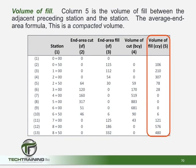Column 5 is the volume of fill between the two previous stations, coming from column 3 — and again these are compacted cubic yards. Station 0+00 had an average end area of 0, while station 0+50 had an average end area of 115 square feet. Taking those two numbers, dividing by 2 gives 57.5 square feet, multiplied by the distance of 50 feet, divided by 27, gives a result of 106 cubic yards of fill material at this particular location.